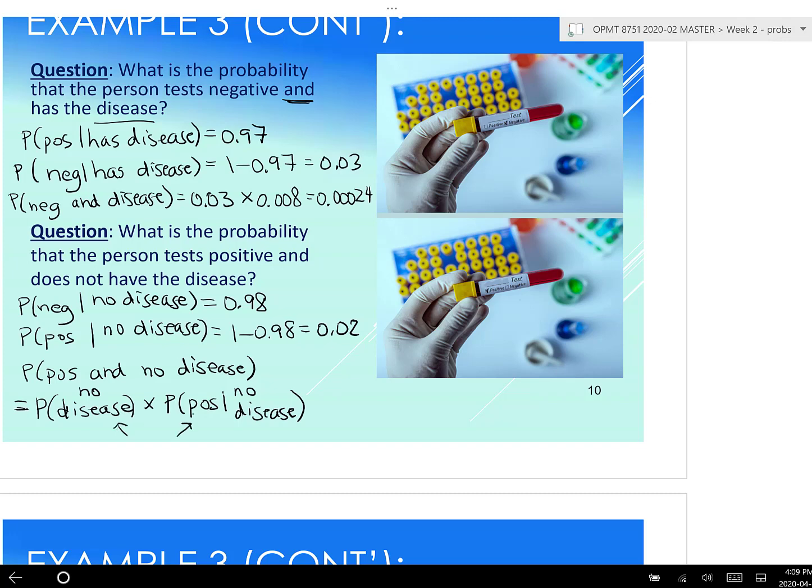Note, you can write these in either order in multiplication. Odds of no disease. Well, we know the odds of having the disease are 0.008. What are the odds of not having the disease? They are 1 minus that, which actually gives 0.992. And then we already figured out what positive given no disease was. That's that 0.02. Multiply those two together. Figure out what's in your bracket first, which is that 0.992, and then times by the 0.02. And that gives us 0.01984.